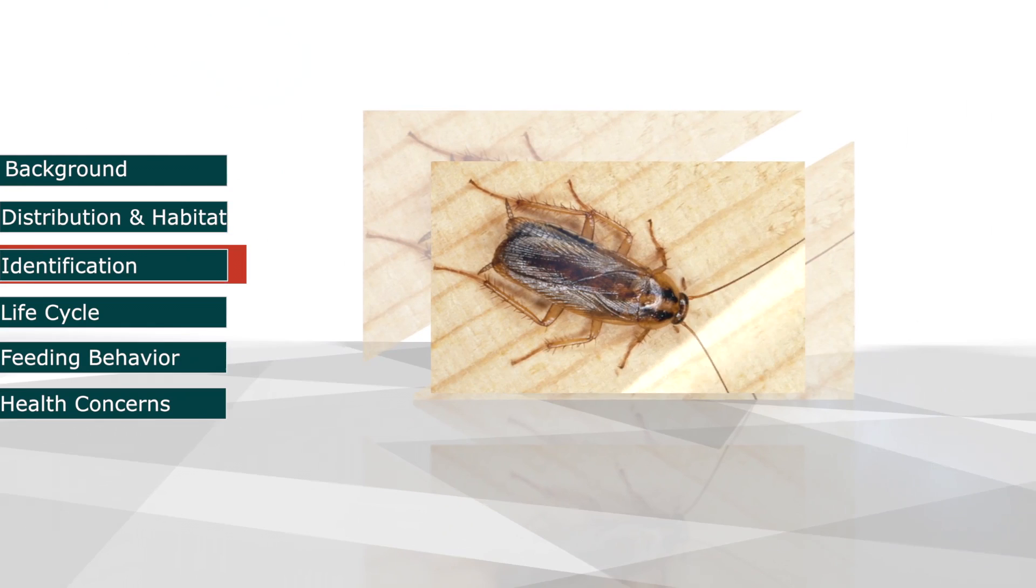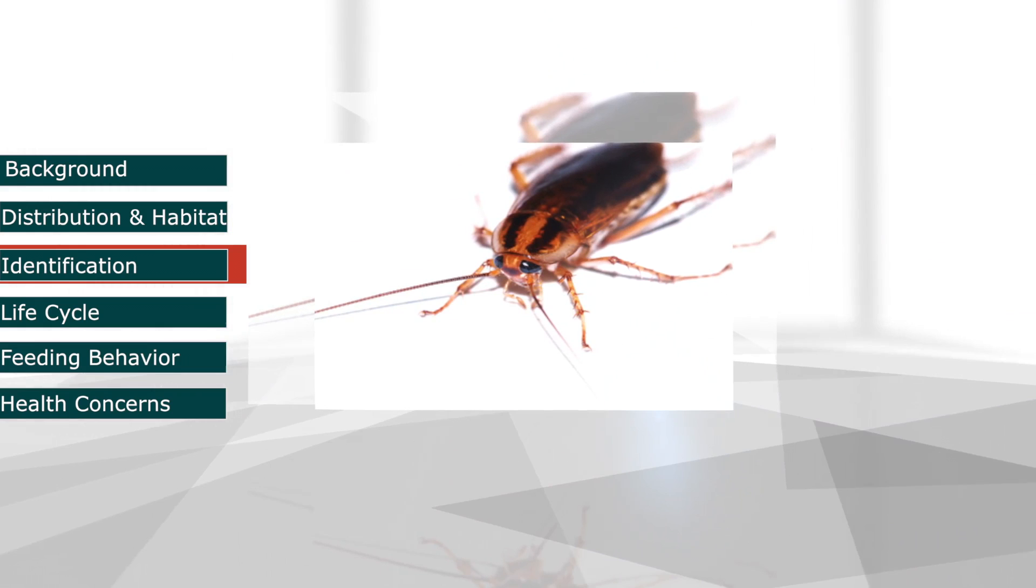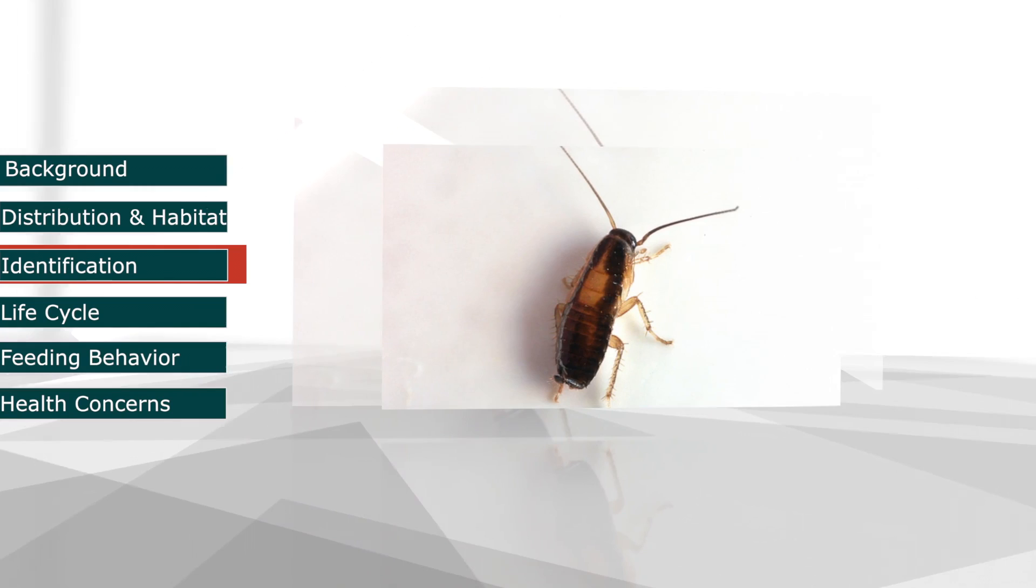German cockroaches average half an inch long and are brown in color with two dark stripes running from their head to their wings. They have wings but are unable to fly. Nymphs resemble adults but are smaller and lack wings.